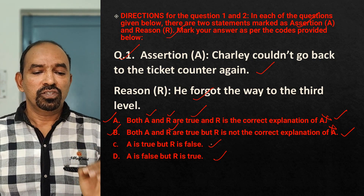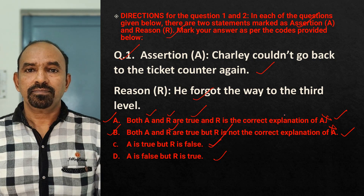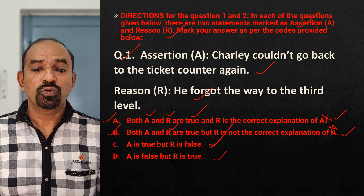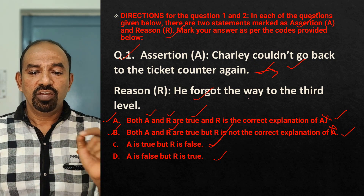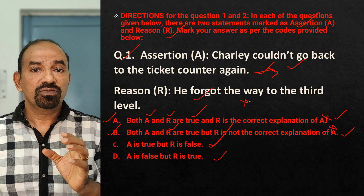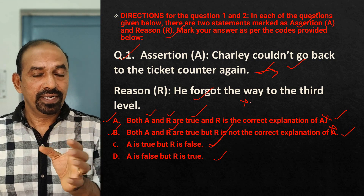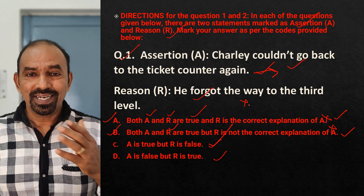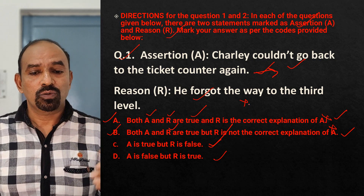Option C: A is true, but R is false. Yes, this is the right option. Charlie couldn't go back to the ticket counter — this statement is true. But the reason that he forgot the way to the third level is false. It is not because of forgetfulness; it is because the third level existed only in his fancy.